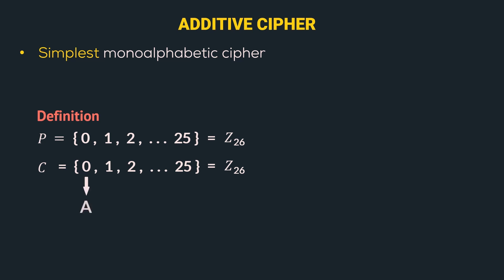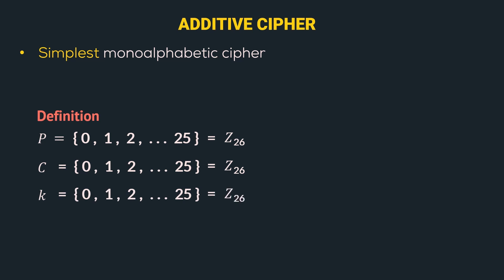Here 0 represents uppercase alphabet A, one represents uppercase alphabet B, and so on till 25 represents uppercase alphabet Z. The key K also has the same range as P and C, i.e. from 0 to 25.